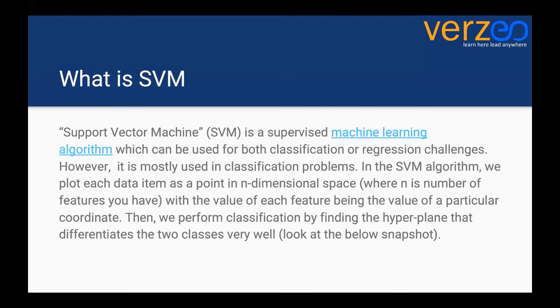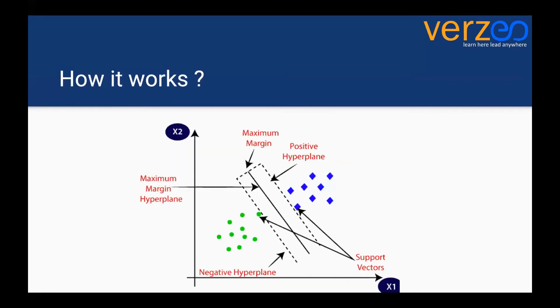So how it works is, let's say we have two classes of data. We have green dots here—let's say these are cucumbers—and the blue dots here are the peaches, or pears, whatever.